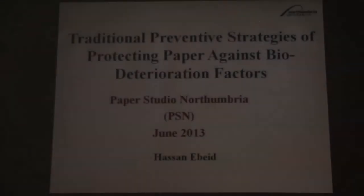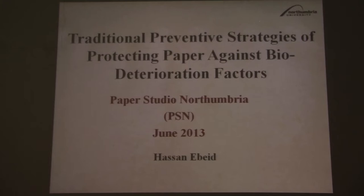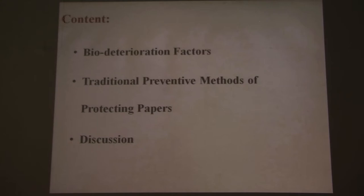Today our talk is about traditional preventive measures which have been used in the past to protect paper from biological biodegradation factors. The content of the talk is mainly about three points: the first is about the meaning of bio-deterioration factors, the second is about traditional preventive methods of protecting papers, and finally we have a discussion.